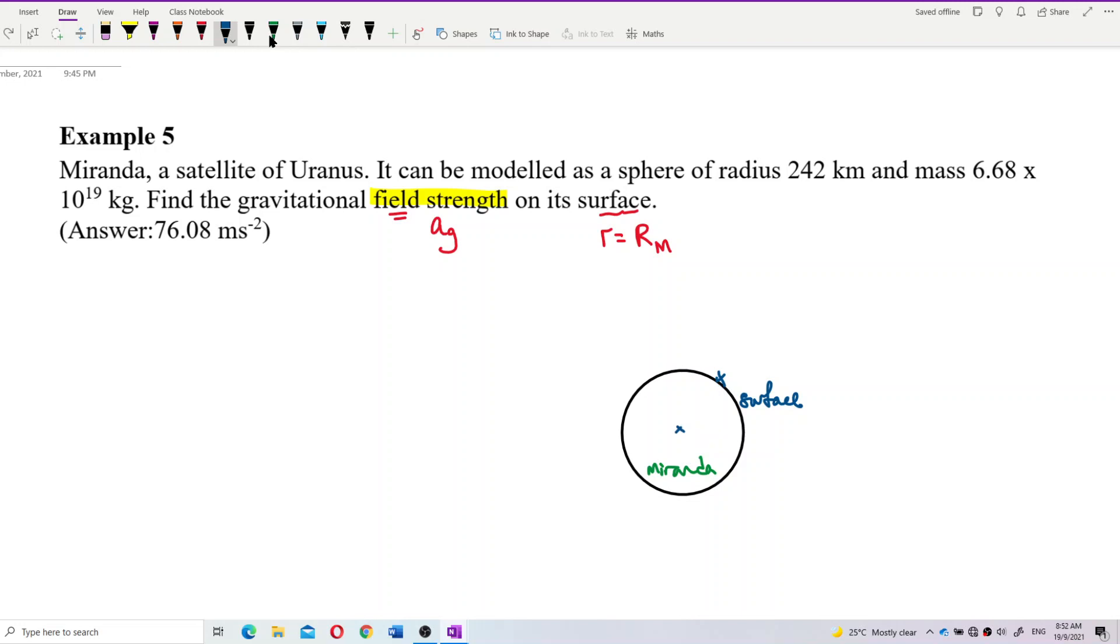What's the R from the center of Miranda? The R should be the radius of Miranda. We want to find the field strength at that point. So, what is the acceleration due to gravity at that surface? The distance to the center of Miranda is the radius itself. This is the radius already, the radius of Miranda.